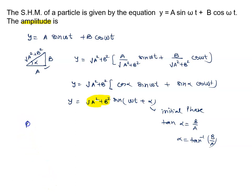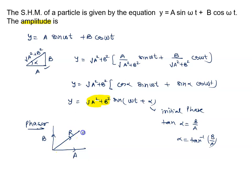Another method is the phasor trick. We draw a sin(ωt), then b sin(ωt + π/2) which is b cos(ωt), and the resultant hypotenuse R = √(a² + b²), with angle α. Both methods give the same answer: amplitude is √(a² + b²).